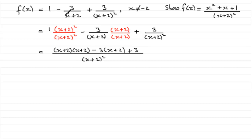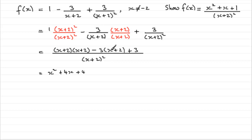With a bit of practice you'd go straight to this line, but I'll include it just in case. Now we need to expand the top. For the first term we get x squared, plus 2x plus another 2x giving 4x, plus 2 times 2 which is 4. For the second term, minus 3 times x plus 2 gives minus 3x minus 6. And finally plus 3. All over x plus 2 squared.